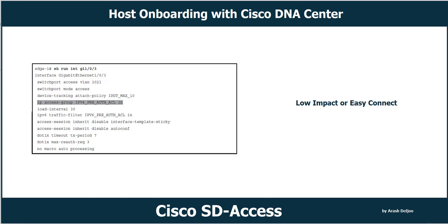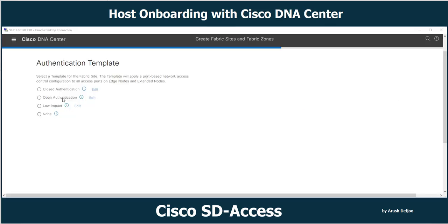In the low impact method, the pre-authorization ACL only allows DHCP and DNS traffic. If you need to change the pre-authentication ACL or authentication template parameters, you can modify them from Cisco DNA Center by clicking Edit.